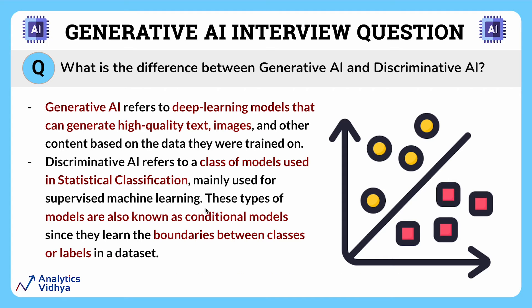These types of models are also known as conditional models since they learn the boundaries between classes or labels in a dataset. In simple words, a discriminative model is used to identify, figure out, and classify things based on the information it has been provided. It's handy for tasks where we just need to make accurate predictions or classifications, like identifying spam emails in your inbox.